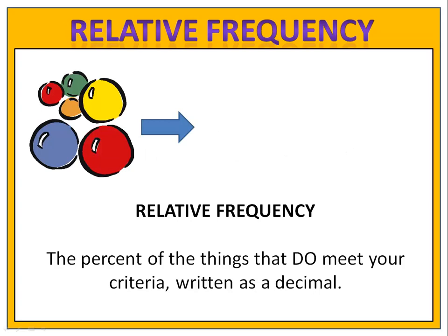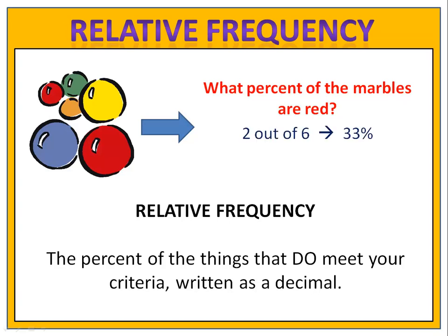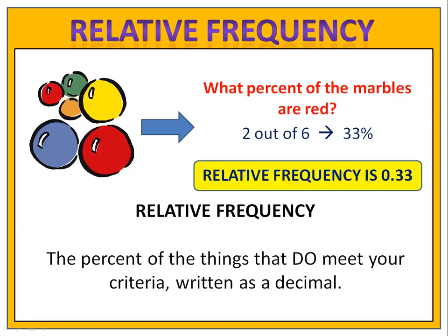Here we have six marbles. What percent of the marbles are red, or what is the relative frequency of a red marble? Two out of the six are red. That's 33%, and so the relative frequency is 0.33.